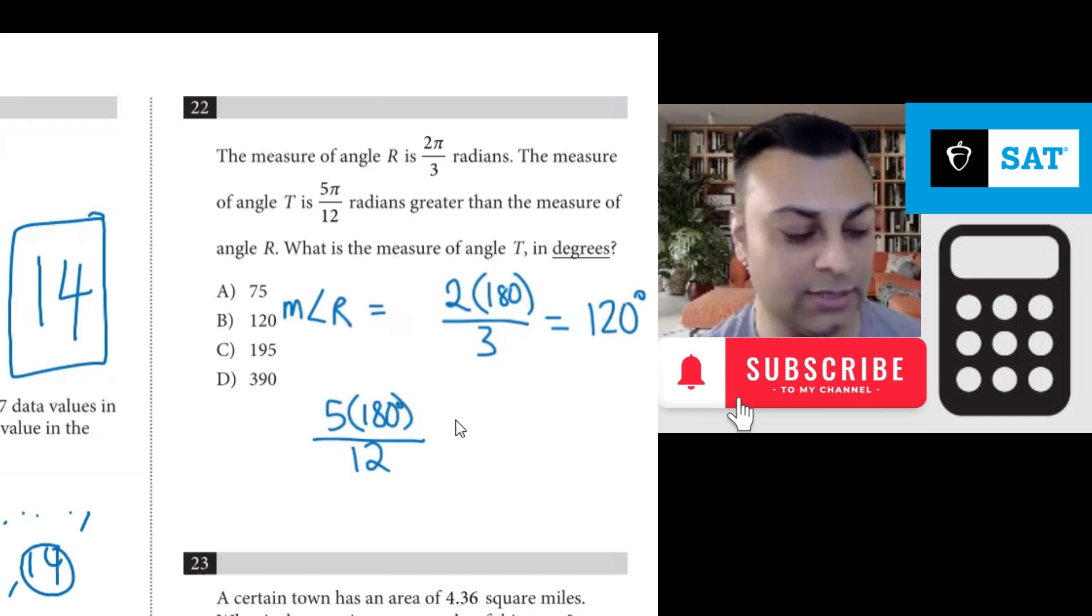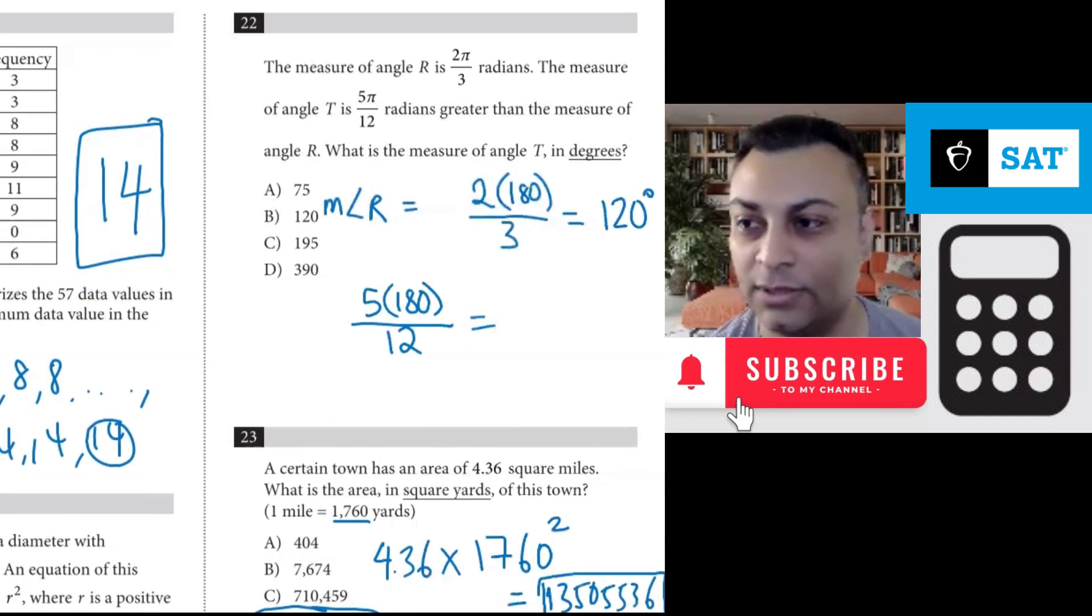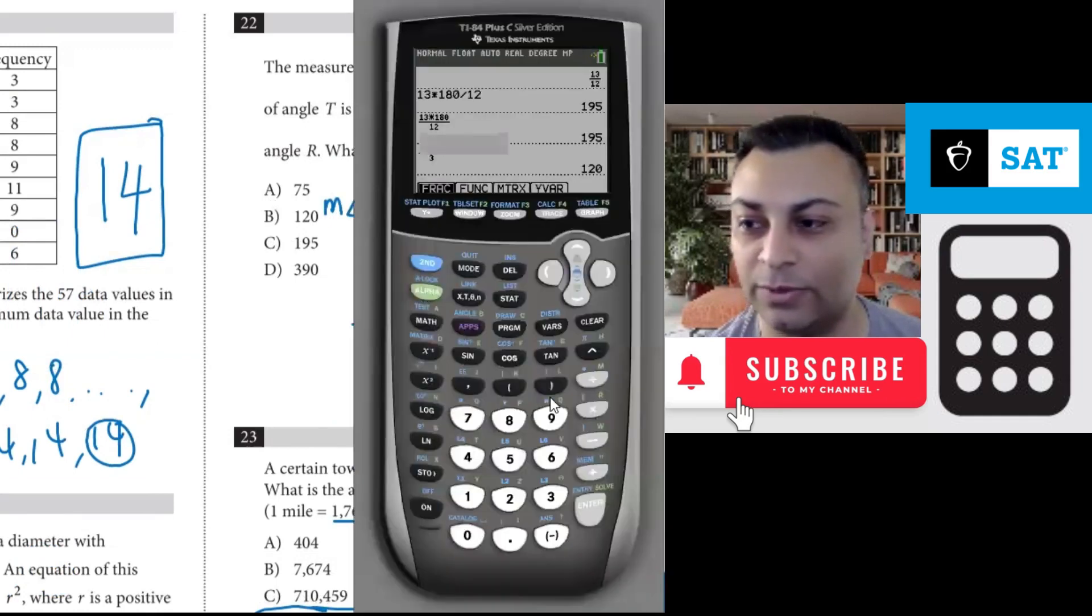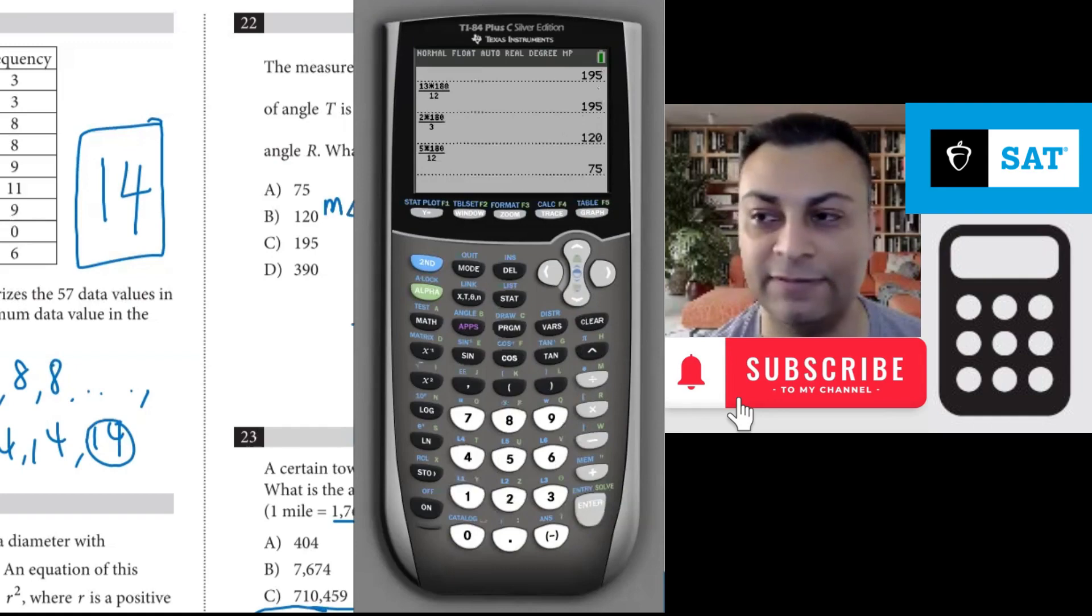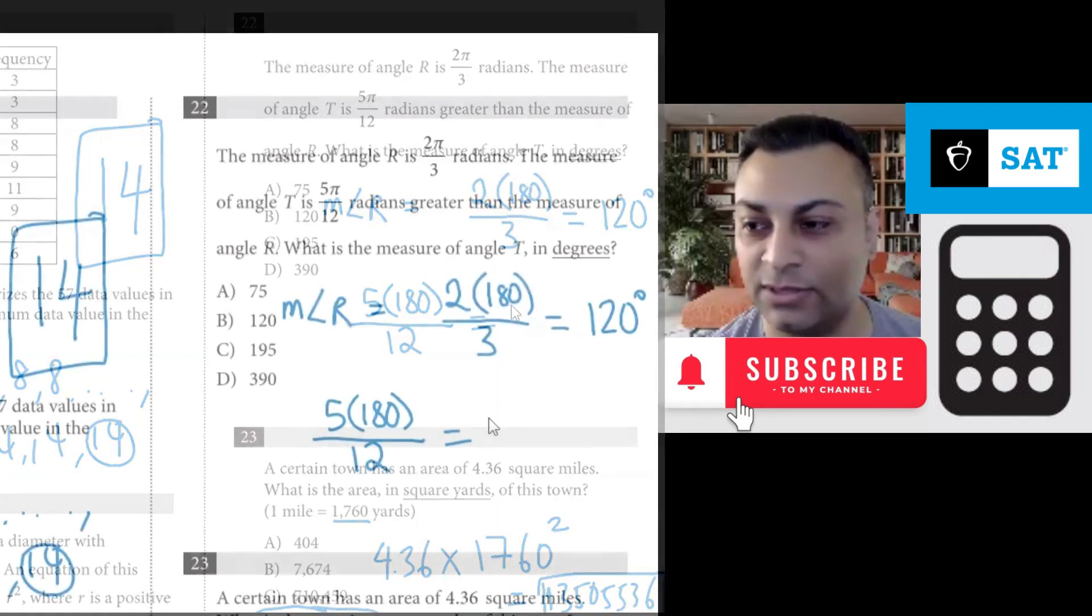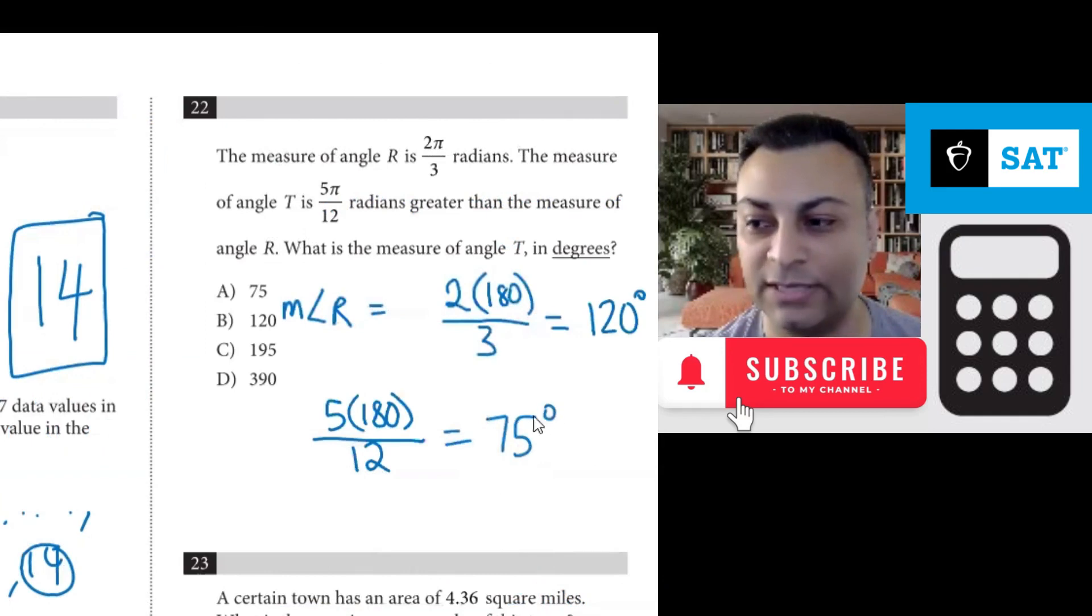And so you have this number. Calculator allows us to compute that. So you get 5 times 180 divided by 12. It is 75 degrees. So this is 75 degrees. Be careful, that's not the final answer.